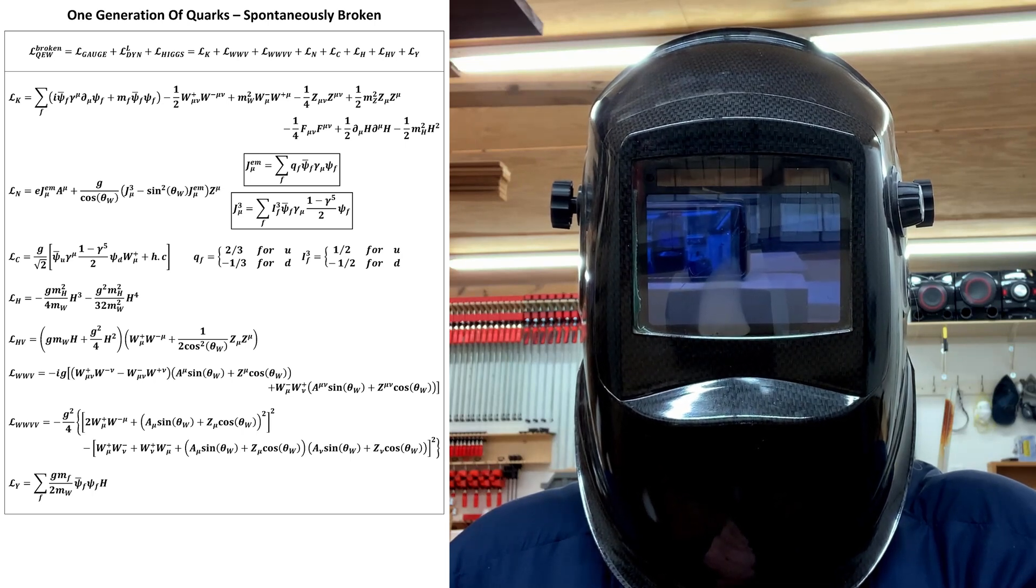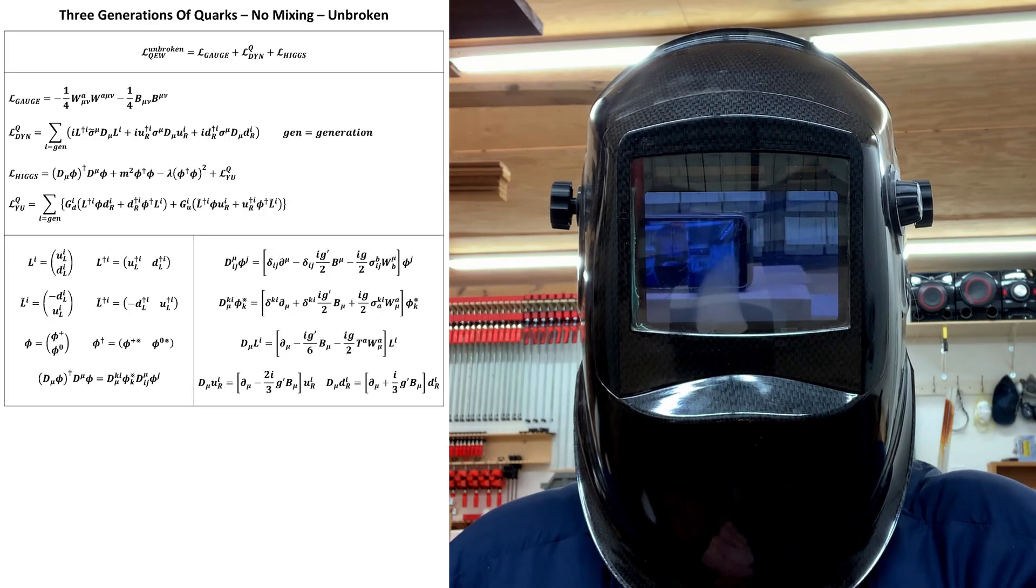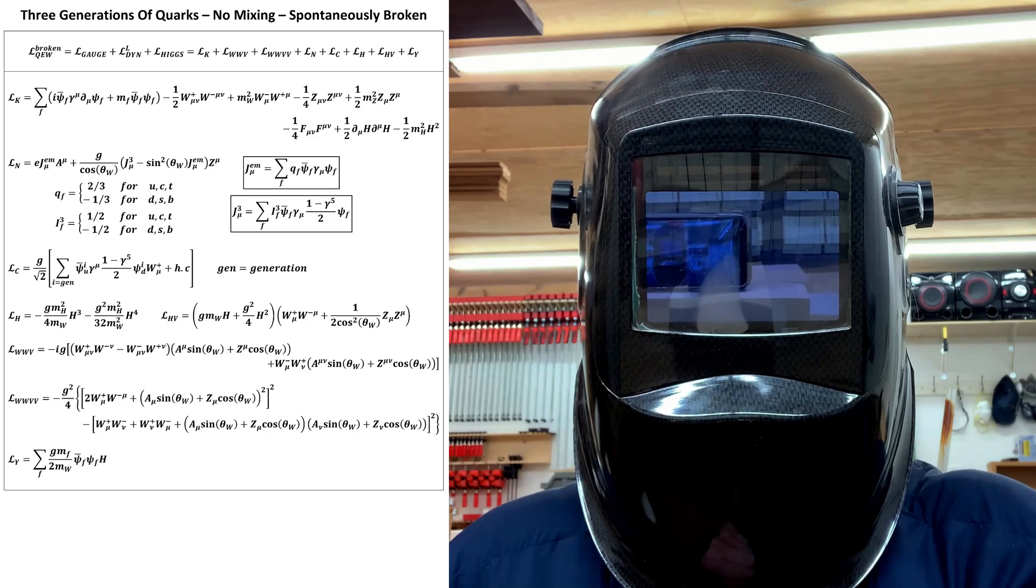Except, of course, for the differing Yukawa coupling constants, which produce the mass differences. That leaves us with this unbroken Lagrangian and this spontaneously broken Lagrangian.